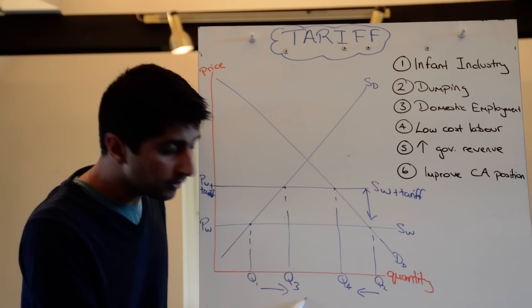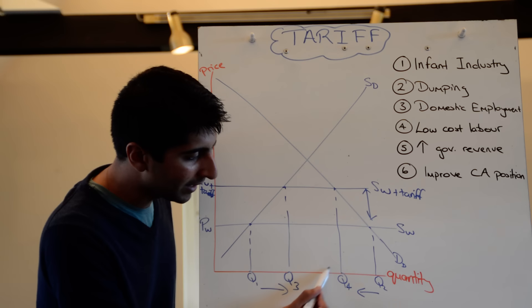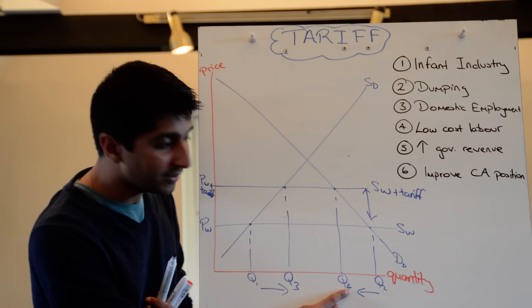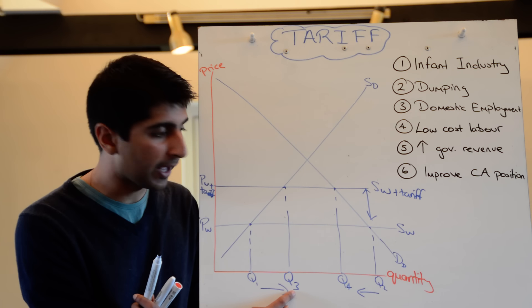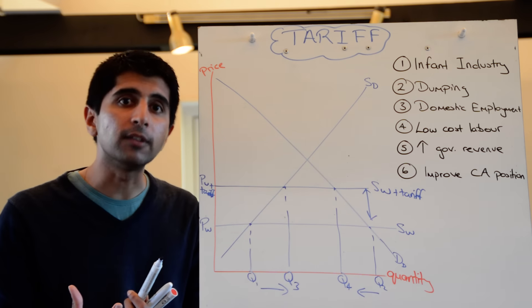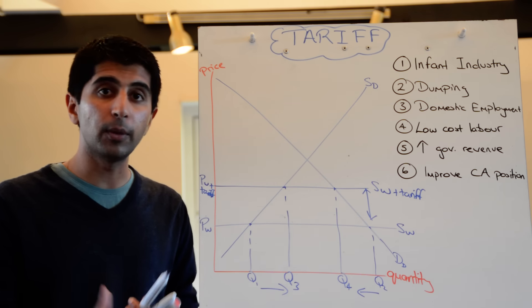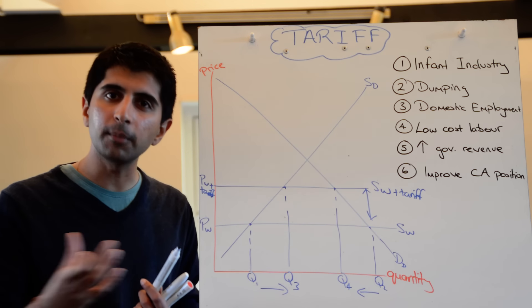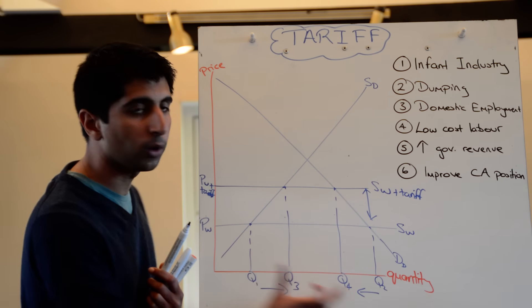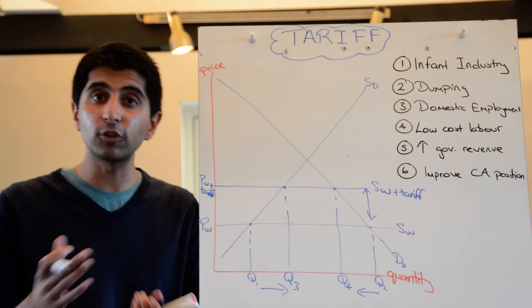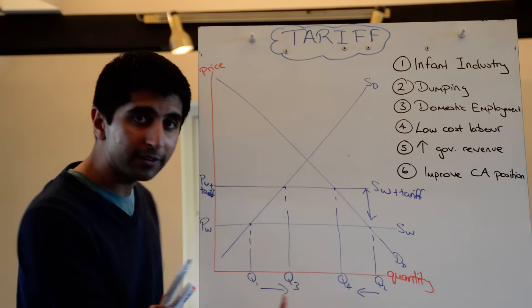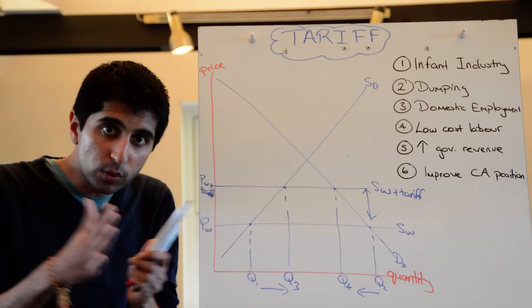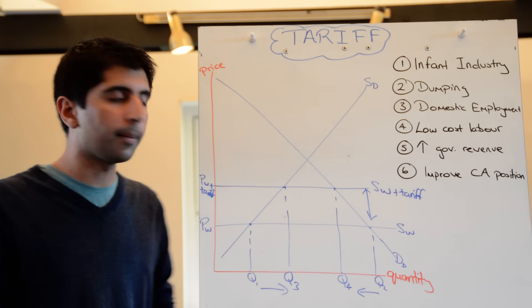So domestic supply has increased to Q3. Domestic demand has decreased to Q4. What's happened to imports now? Well look, there's demand, there's domestic supply. So the excess demand remains, but it's much, much smaller than what it was before. The distance between Q3 and Q4 is much smaller than what the distance was before between Q1 and Q2. So imports have been squeezed because domestic demand has contracted, because domestic supply has extended. So we've squeezed the quantity of imports coming into the country.